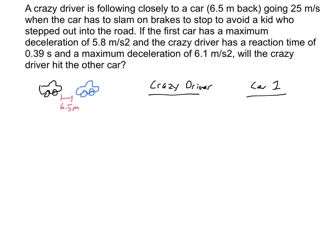Now, a kid steps out into the road, the problem says, and so the first car then stomps on the brakes to try to avoid hitting the kid. And so the first car has a maximum deceleration of 5.8 meters per second squared.